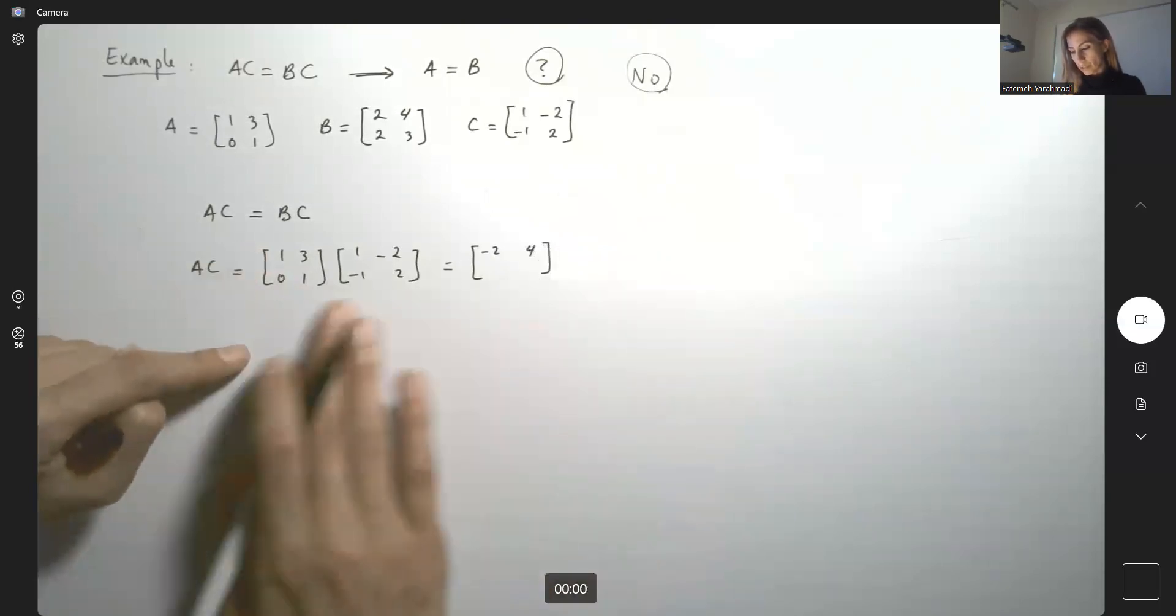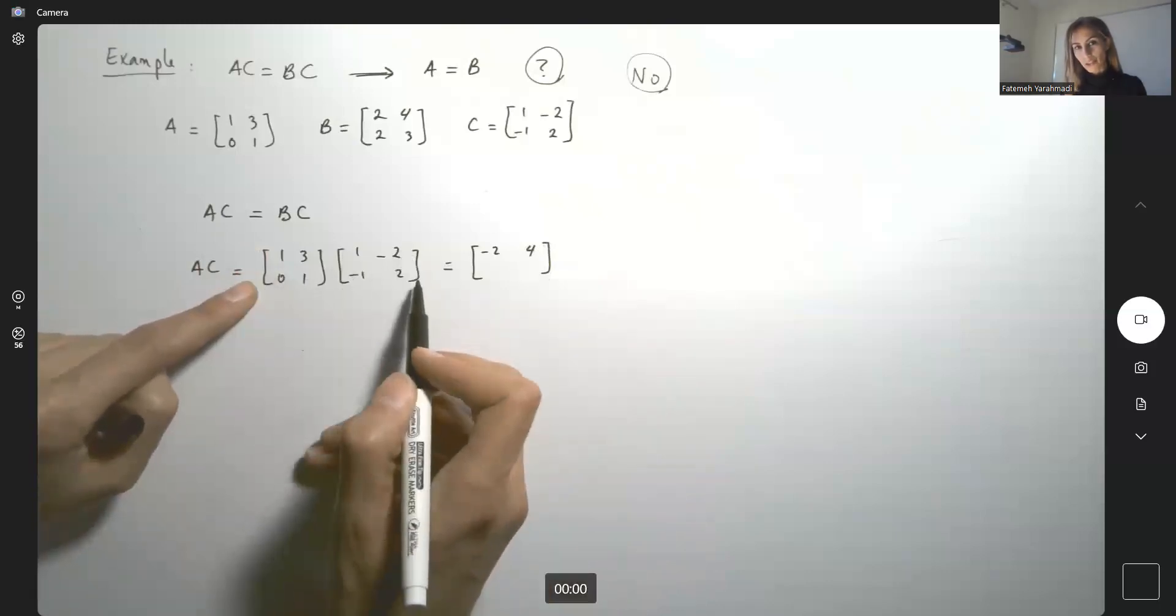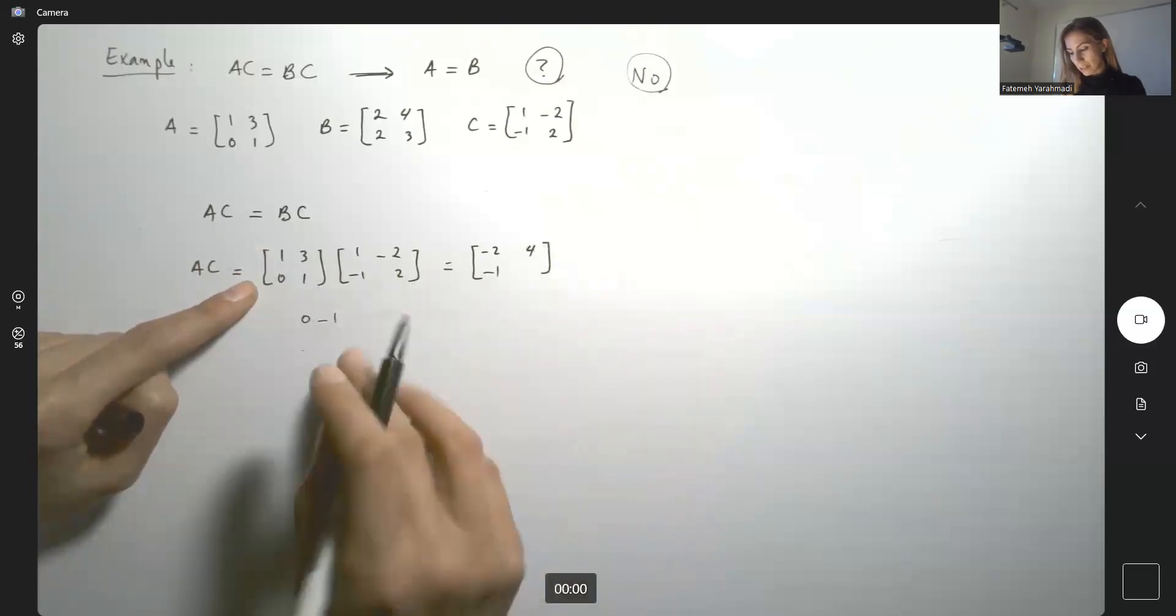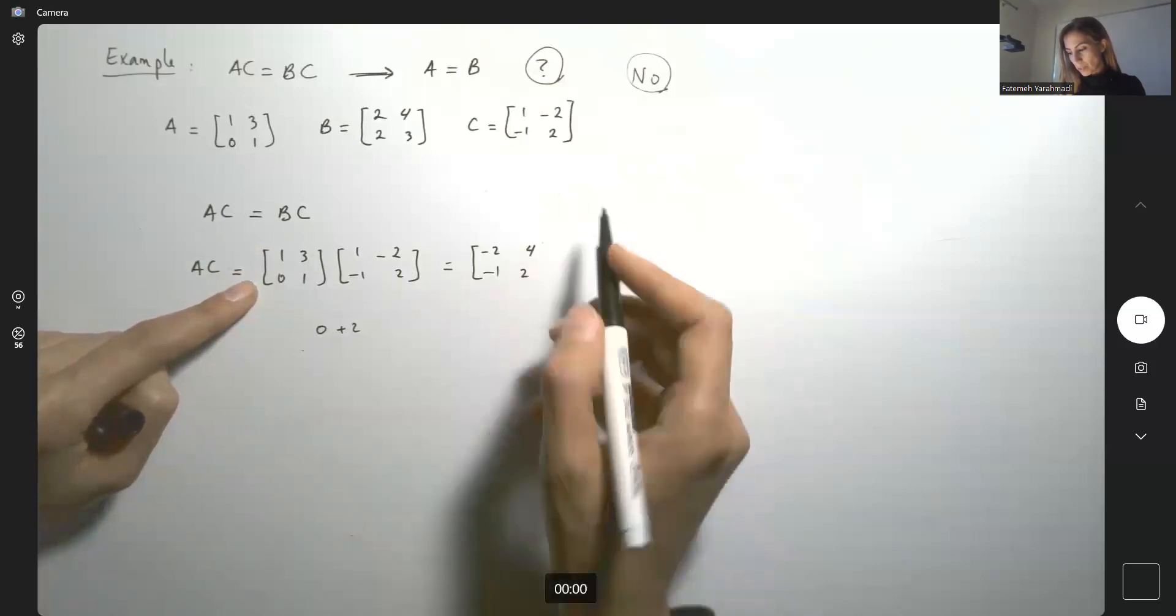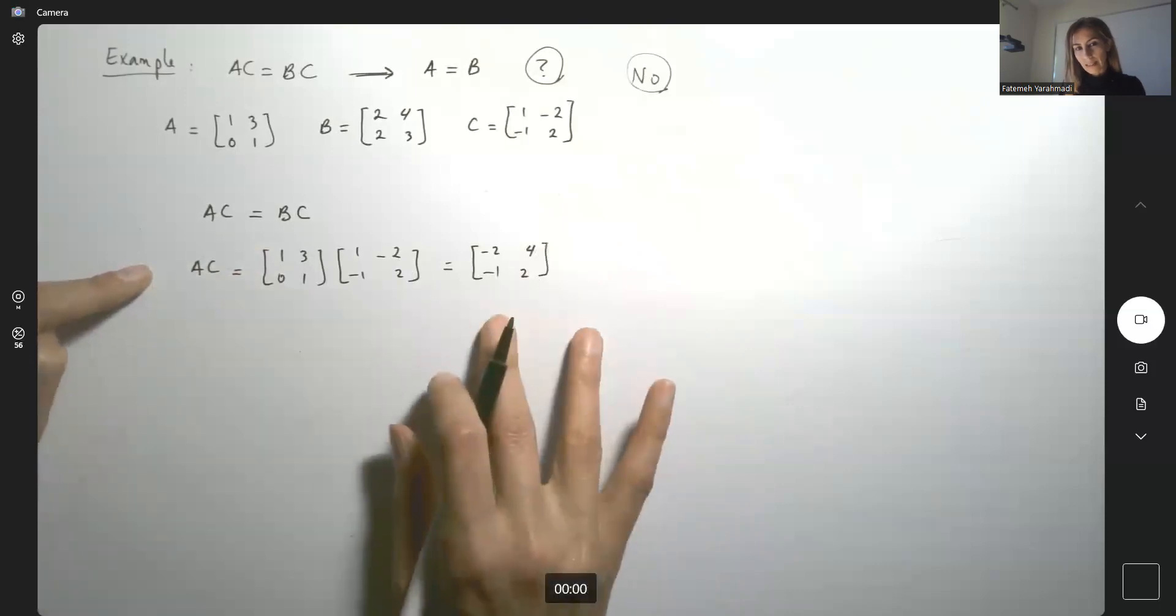Then we're going to move on to the second row. So you're going to take the second row and multiply by each column. 0 times 1, 0, minus 1, negative 1. Then 0 times negative 2, 0, plus 2, which is 2. So here you have AC.